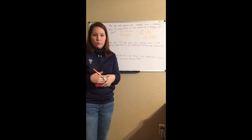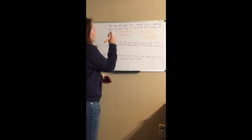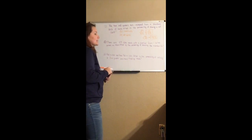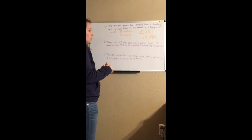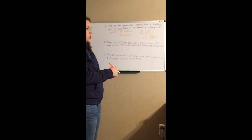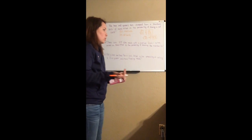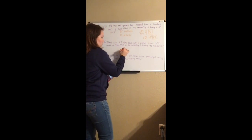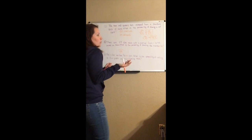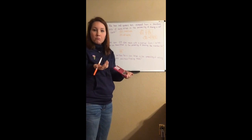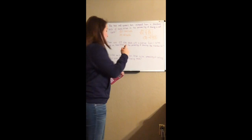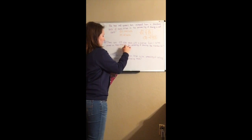Next: there are 49 tiles, each with a number from 1 to 49. What is the probability of drawing the tile numbered 26? There are 49 total outcomes, and only one tile has the number 26, so the probability is simply one over 49.